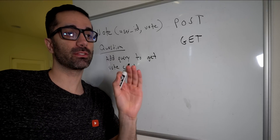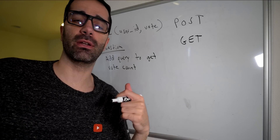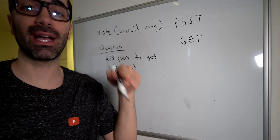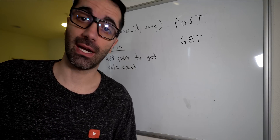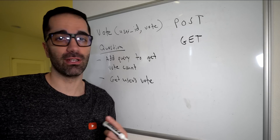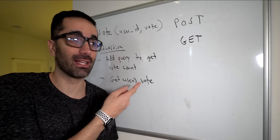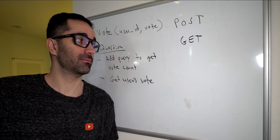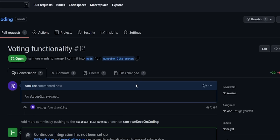Another thing I just thought of: when we get the question, we want to get the previous vote of the current user. So if someone had voted thumbs up previously, when they go back to that page we want that thumbs up to already be highlighted. I think it just goes to show that you're not going to think of every little thing during the initial design phase — new things are going to come up, and that's just part of the development process.